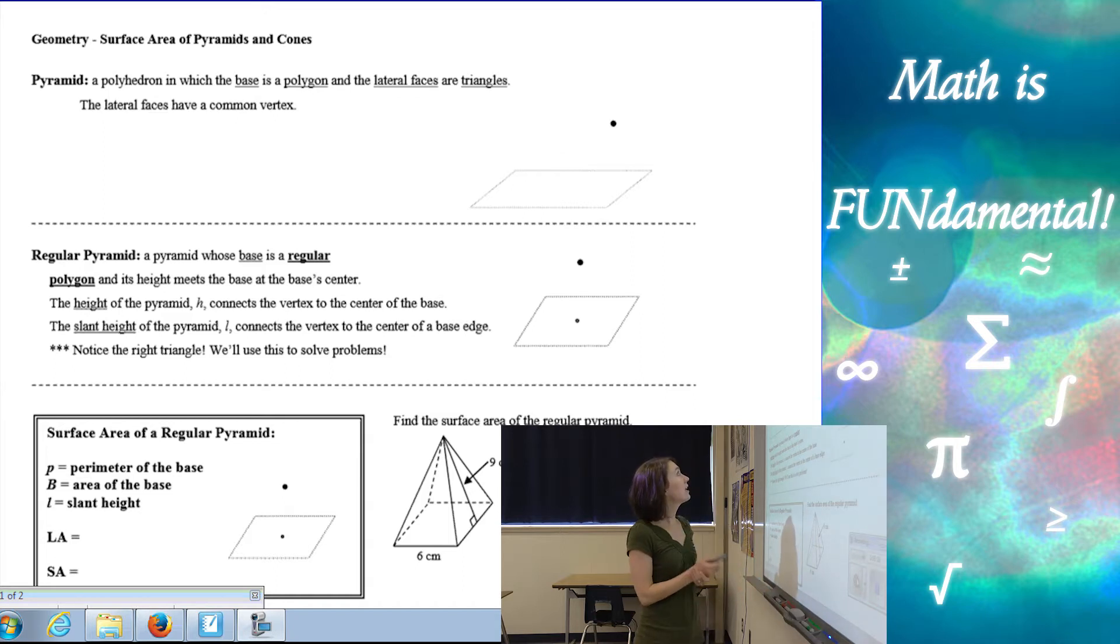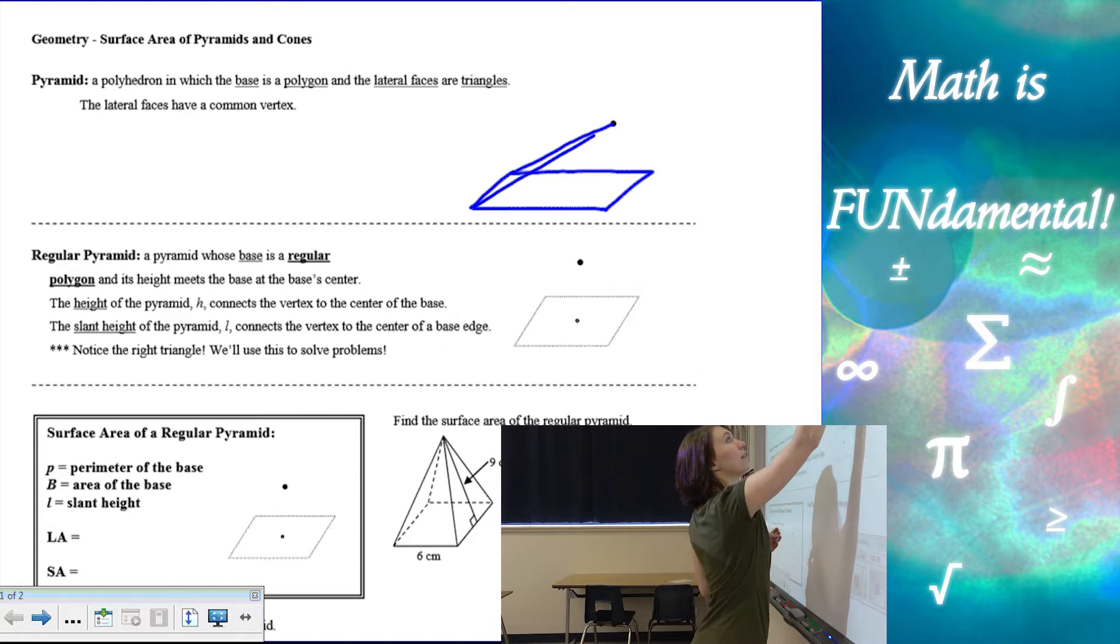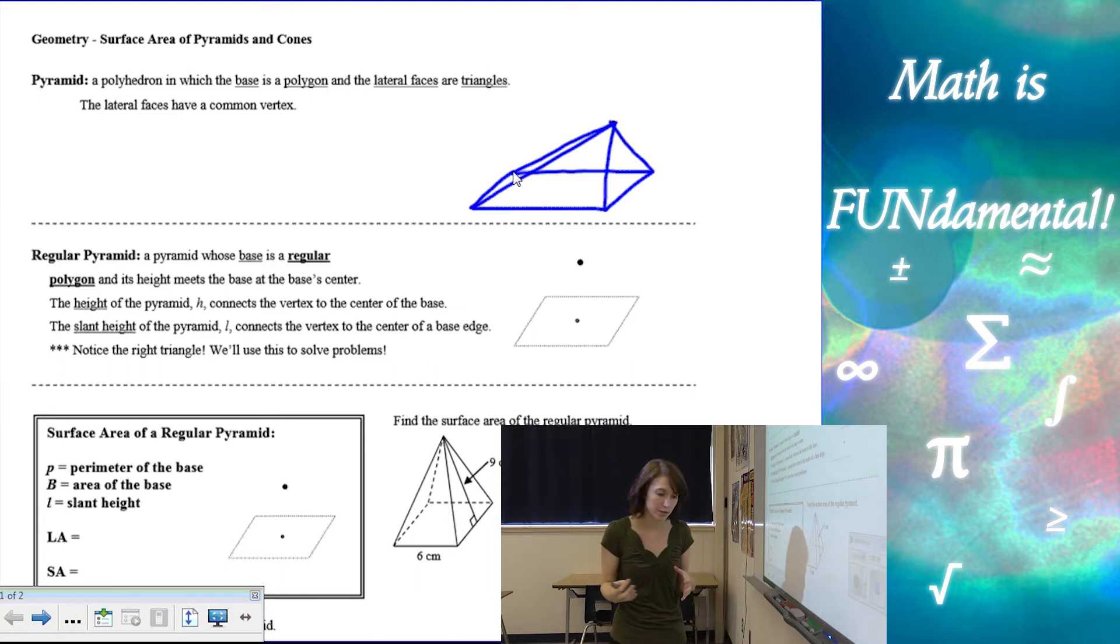A pyramid is a polyhedron in which the base is a polygon and the lateral faces are all triangles. So the lateral faces, let me draw a picture. So here's our base. We've got, in this case, a nice parallelogram, a quadrilateral. And then all of the lateral faces are going to be triangles all coming up towards a common vertex.